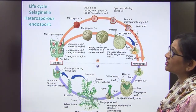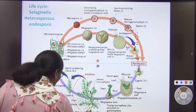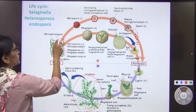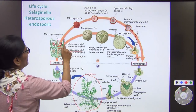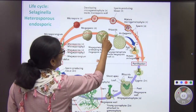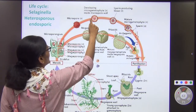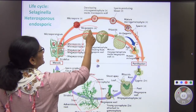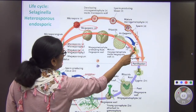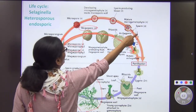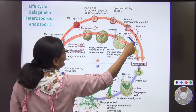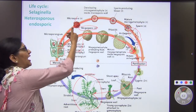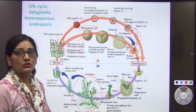Let us see how a heterosporous Selaginella life cycle is depicted. This is the plant — it is a sporophyte and will form spores, but it has two different types of leaves. This is your megasporophyll and this is your microsporophyll. The megasporophyll will form megaspore, and the microsporophyll will form microspore. The microspore will form the male gametophyte, and the male gametophyte will form the male gamete. The megaspore will form the female gametophyte containing archegonia which will form the egg. So both gametes are formed on two different gametophytes from two different types of spores. Later they will fuse to form a zygote, and the zygote will again divide to form a sporophyte. This is called heterospory.